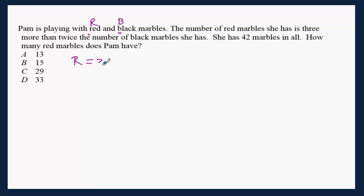Three more than twice the number of black B marbles she has. She has 42 marbles in all. This means the red marble plus black marble equals 42. How many red marbles does Pam have? We need to find R.